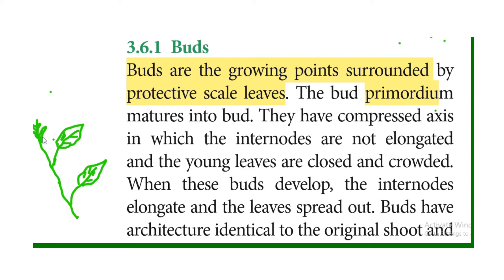The buds are at the end of the area. The end of the area is closed and crowded with gaps, but the buds develop. The inter-nodal region elongates and leaves spread out, so the crowd is more.